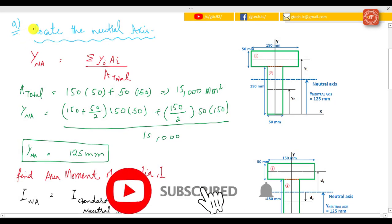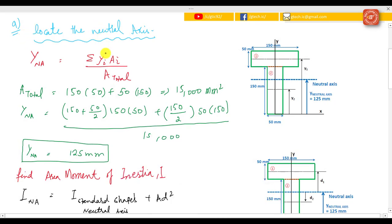Let's start with part a. Before finding the moment, you have to calculate the neutral axis and the area moment of inertia. For finding the neutral axis, we know from our previous video lecture: y_neutral axis = summation of (y_i × A_i) divided by A_total.